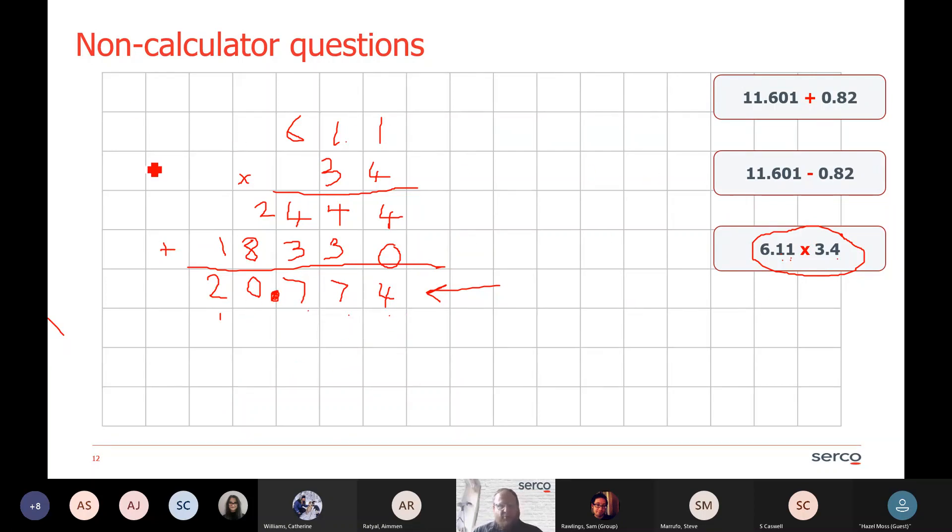What I did was multiply ignoring the decimal points, and then to put the decimal points in at the end, I count how many decimal points are in the question. There were 1, 1, and 4, so three decimal points. And therefore, in my answer, I make sure there are three decimal points. In this case, 20.774. So a little bit different to addition and subtraction. For multiplication, we need to take the decimal point out and then decide where we put it back in at the end.